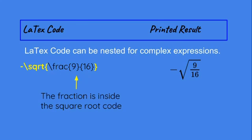LaTeX code can be nested for complex expressions. Take a look here and notice that the code for the square root is the outermost code. Now the fraction code is the code that's inside the square root brackets, so this indicates that there will be a fraction underneath the radical sign.